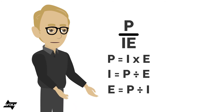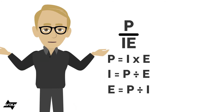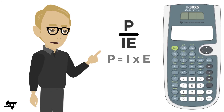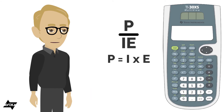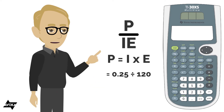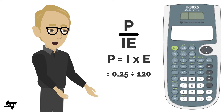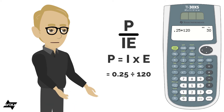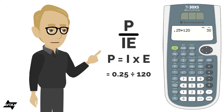Let's do three quick examples with this. To solve for power: current times voltage. Let's say the current is 0.25 amperes and the voltage is 120 volts. 0.25 times 120 — the power consumed in the circuit would be 30 watts.